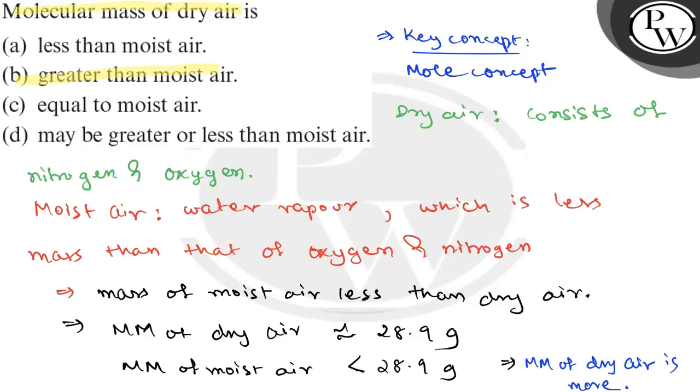That is, molecular mass of dry air is greater than moist air, which is absolutely true and the rest of the options become incorrect. Hope you have understood it well. Best of luck.